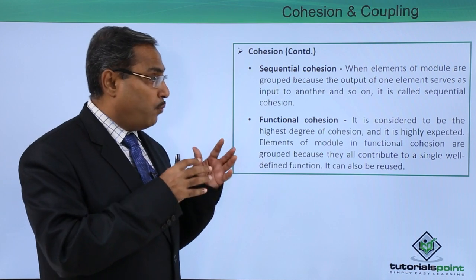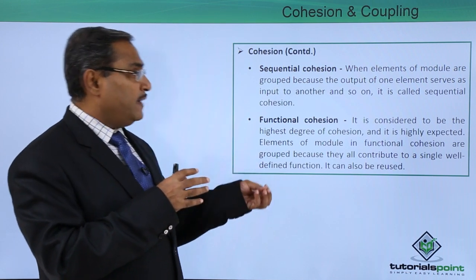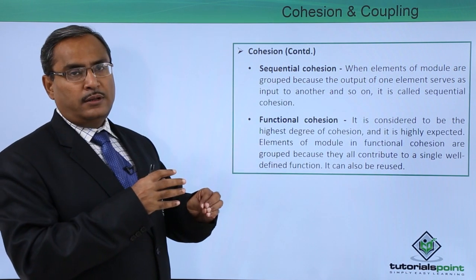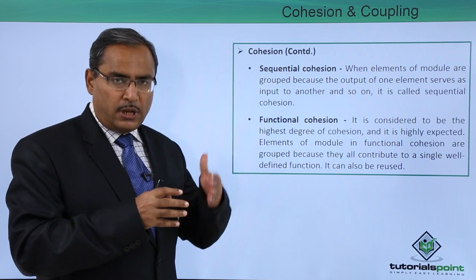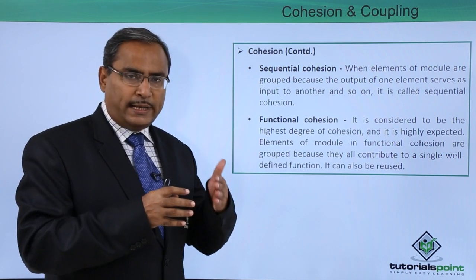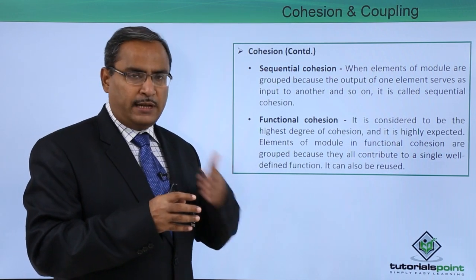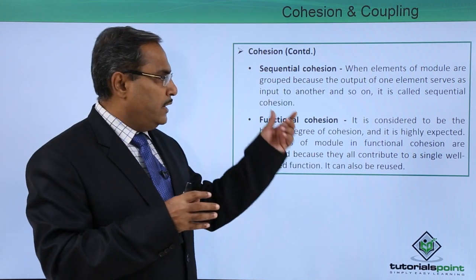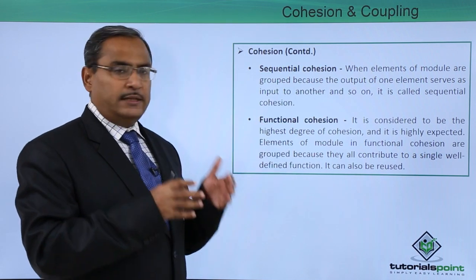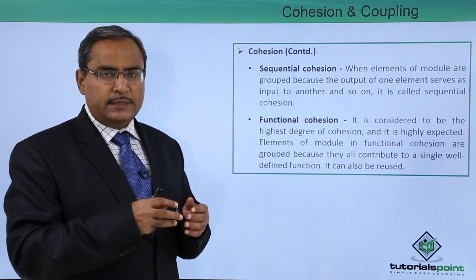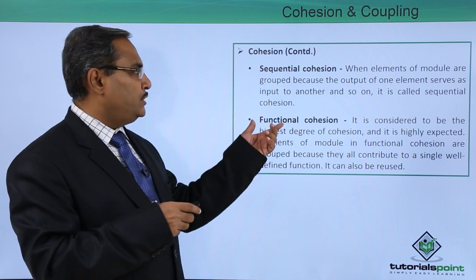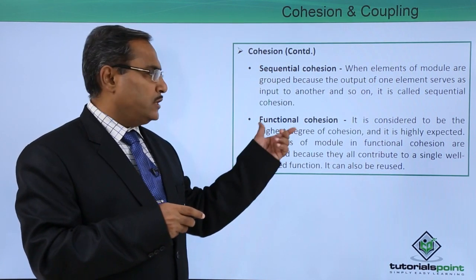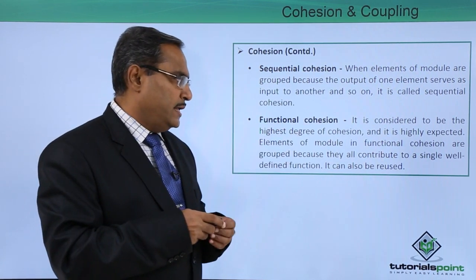The next type is sequential cohesion. When elements of a module are grouped because the output of one element serves as the input to the next element, and so on, that module is showing sequential cohesion.